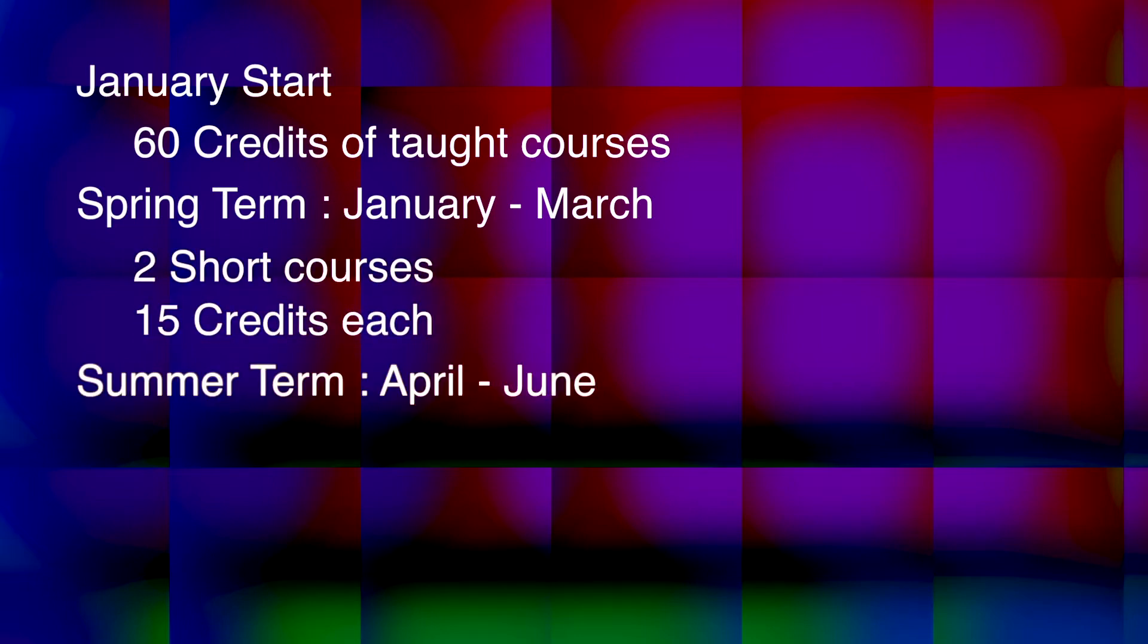So from January to March you will do two short courses each worth 15 credits, and then the summer term from April to the end of June you'll do another two courses again each worth 15 credits. You'll do exams at the end of each term, and then by the end of June in July you will be getting your Graduate Certificate, and if you do well you can proceed straight on in October to our master's program in mathematics.